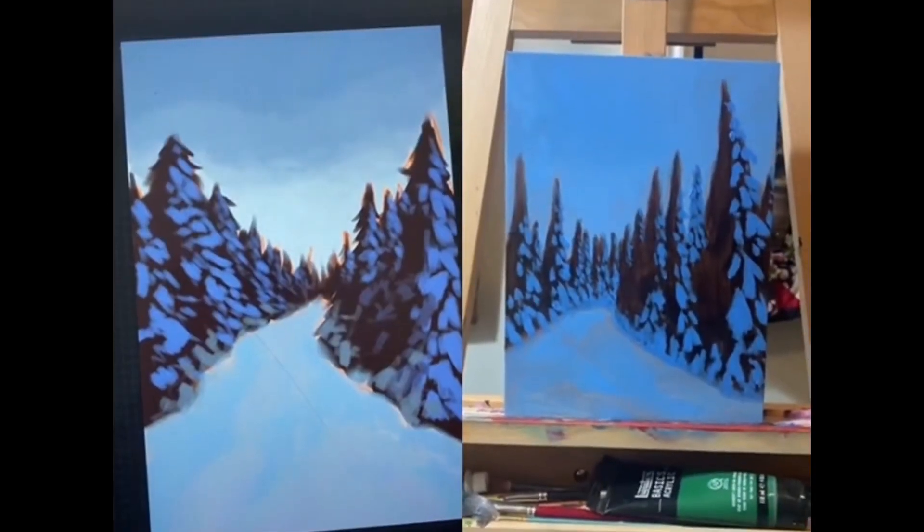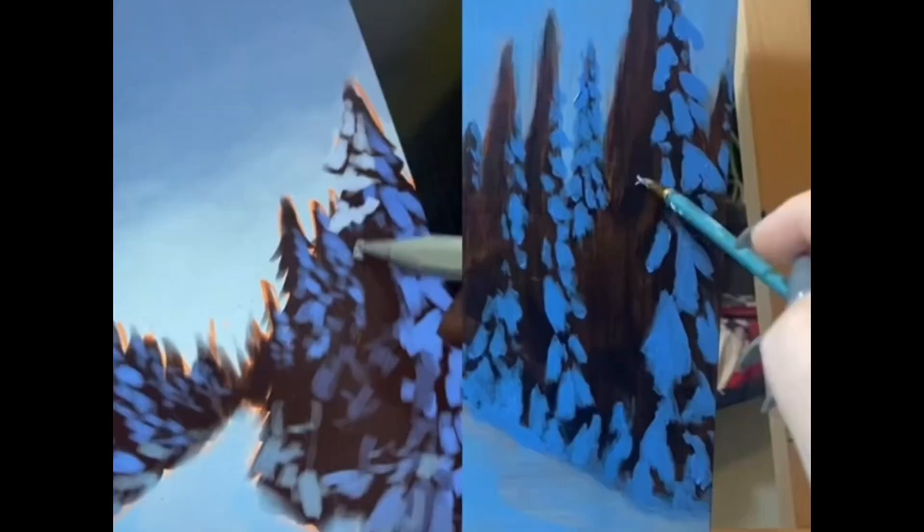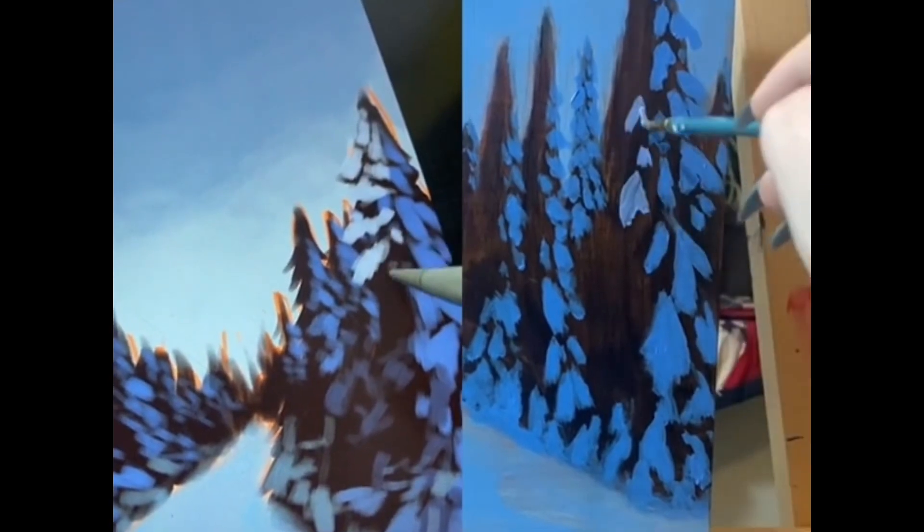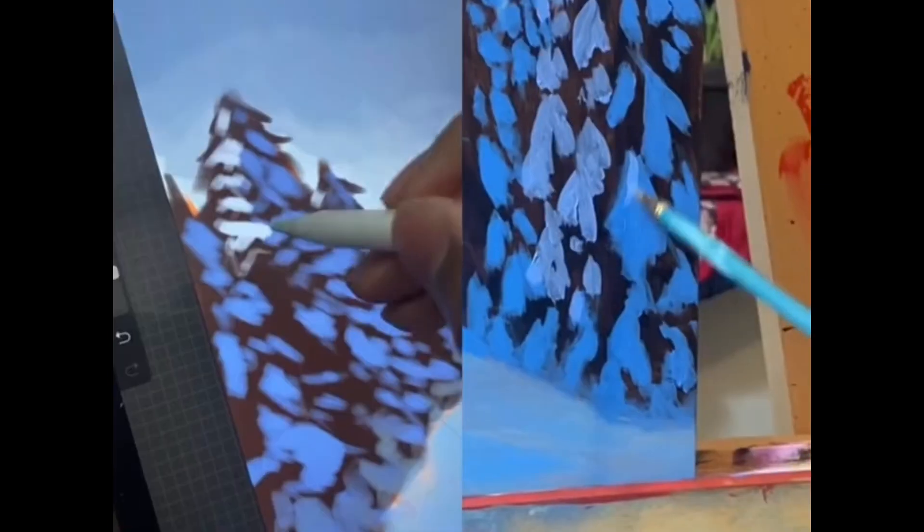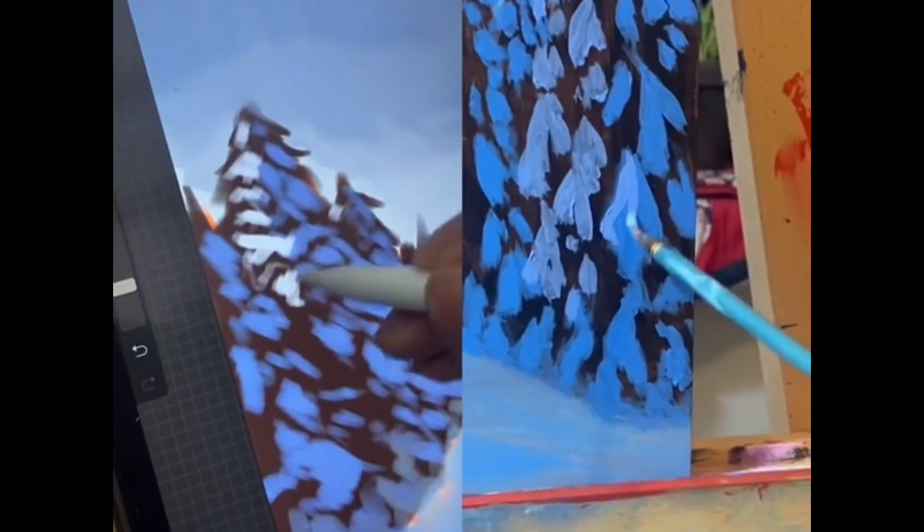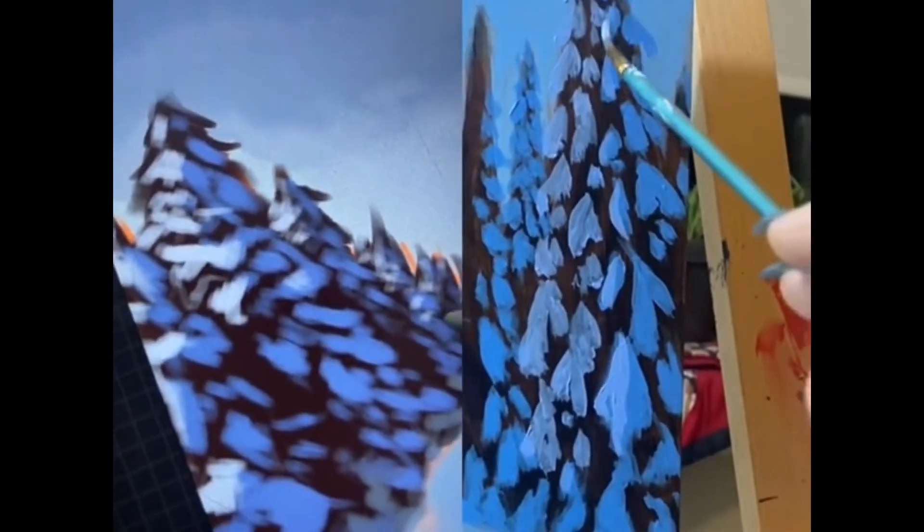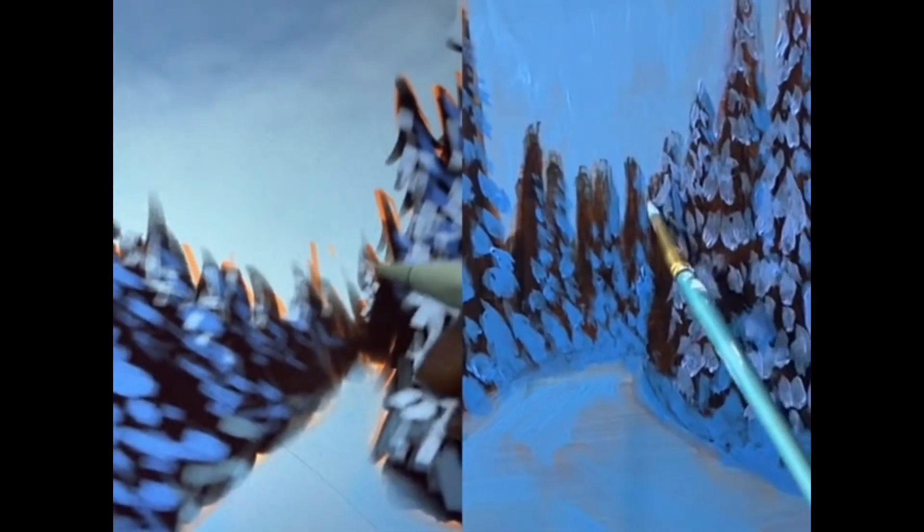I then go in with my medium blue to paint the lumps of snow sitting on the branches that are in the light. I add some of that color to nearby branches to create a sense of light. Make sure these marks get smaller the further they are into the background.